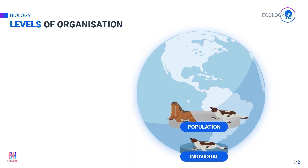The next level is population. All the individuals of the same species that live in an area are all considered a population. Here, we can see the population of seals or walruses.